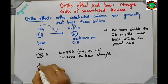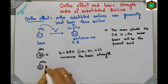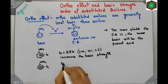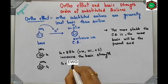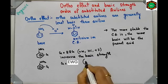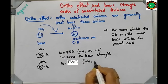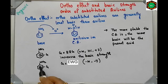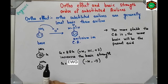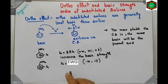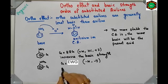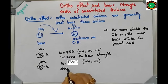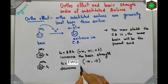In the same way, if on aniline any electron-withdrawing group is present — withdrawing by −M effect or −I effect — it will abstract electron density from nitrogen. So availability of electron density on nitrogen will be decreased and it will become less basic. Such groups decrease the basic strength.